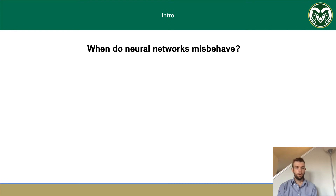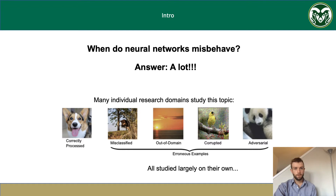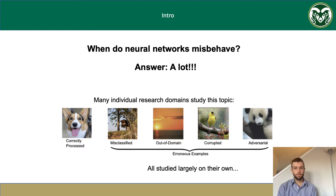So when do neural networks misbehave? The answer is, a lot. There are all kinds of different cases where a neural network fails to correctly process an input and gives an incorrect result. There are misclassified images, out-of-domain images, corrupted images, and adversarial images. All of these are studied largely on their own, in their own domains of research.